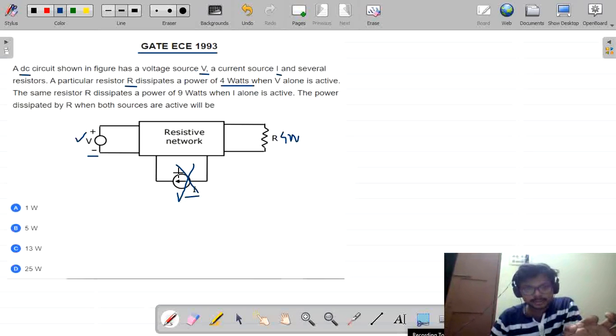As the current source is open circuit, only V is acting. So it is dissipating 4 watts of power.